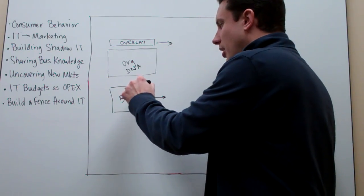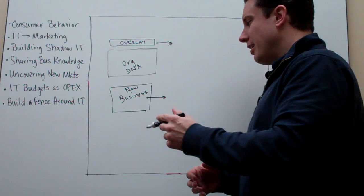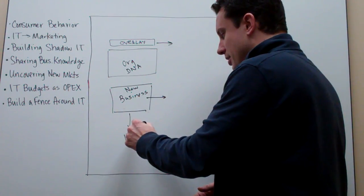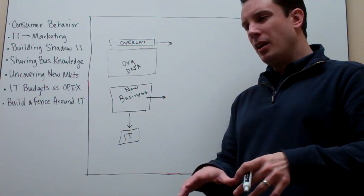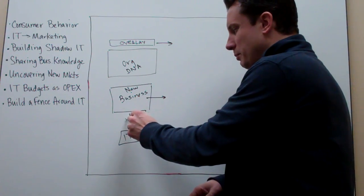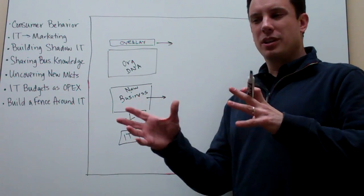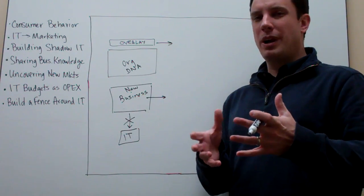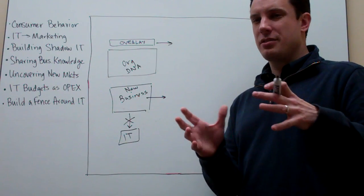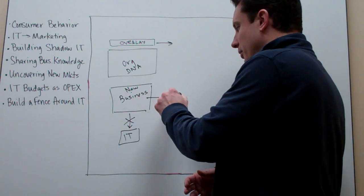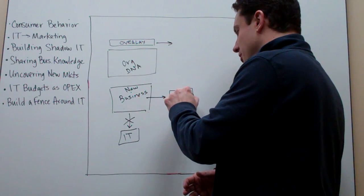And so what often happens with business leaders is they'll say, you know what, I have a route. I could go this route that goes through my traditional IT organization. They help me set up applications, they help me set up environments, but not really prepared to do that today. They don't have the skill set. It doesn't totally align to the way they're organized or funded. And so a lot of times what they will do is they'll sort of create their own version of a new IT, what's sometimes called shadow IT.